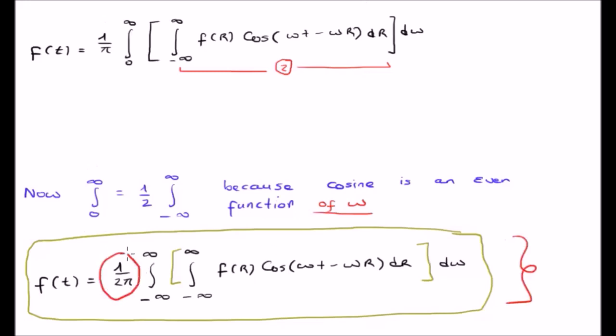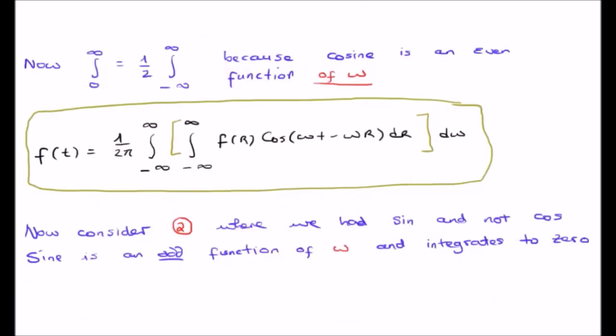This results in the equation written on the bottom of your screen. Note, by the way, now we have a 1 over 2 pi outside on the front. The pi is a legacy issue from Fourier series, and the half comes from changing the integral to a fully infinite integral.